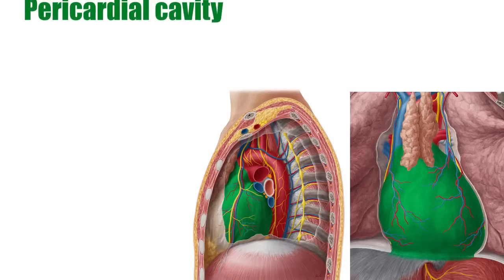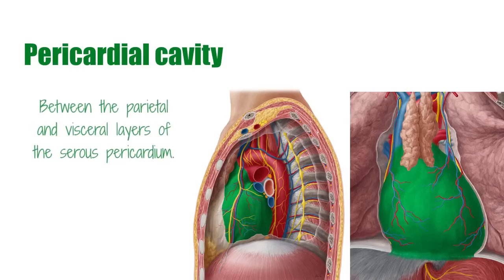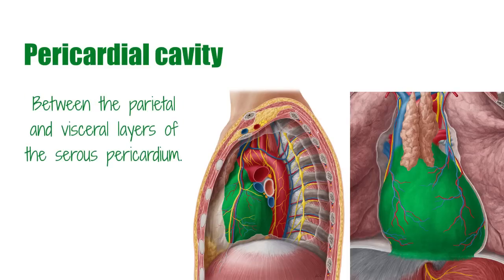The pericardial cavity is the potential space created by the pericardial reflection, between the parietal and visceral layers of the serous pericardium, and this is where the thin film of pericardial fluid is kept, allowing for the two surfaces to be lubricated and rub against one another without any friction.